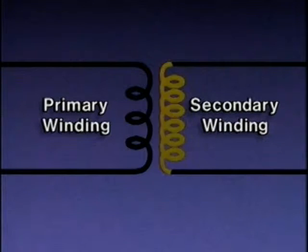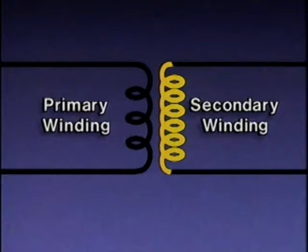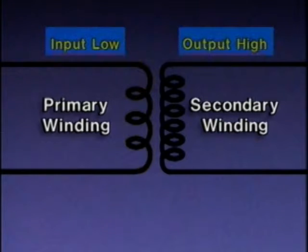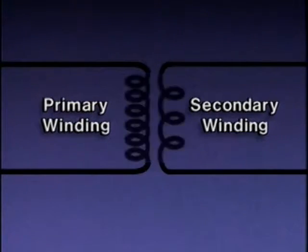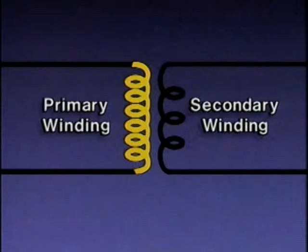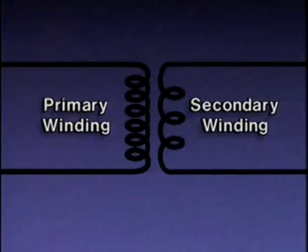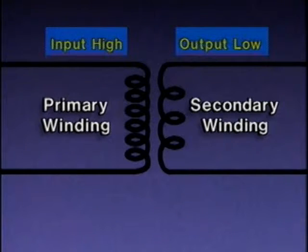This turns ratio determines whether the transformer increases or decreases voltage, and by how much. For example, if there are more turns of wire in the secondary winding than in the primary winding, the output voltage will be higher than the input voltage — the transformer will increase, or step up, the voltage. On the other hand, if there are more turns in the primary winding than in the secondary winding, the output voltage will be lower than the input voltage, and the transformer will decrease, or step down, the voltage.